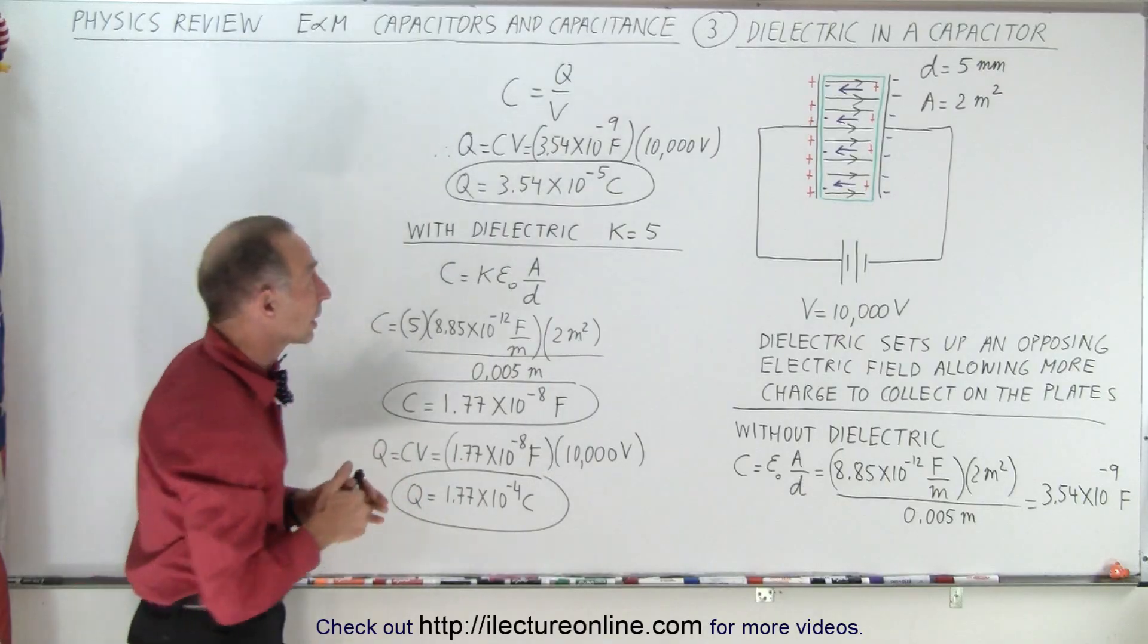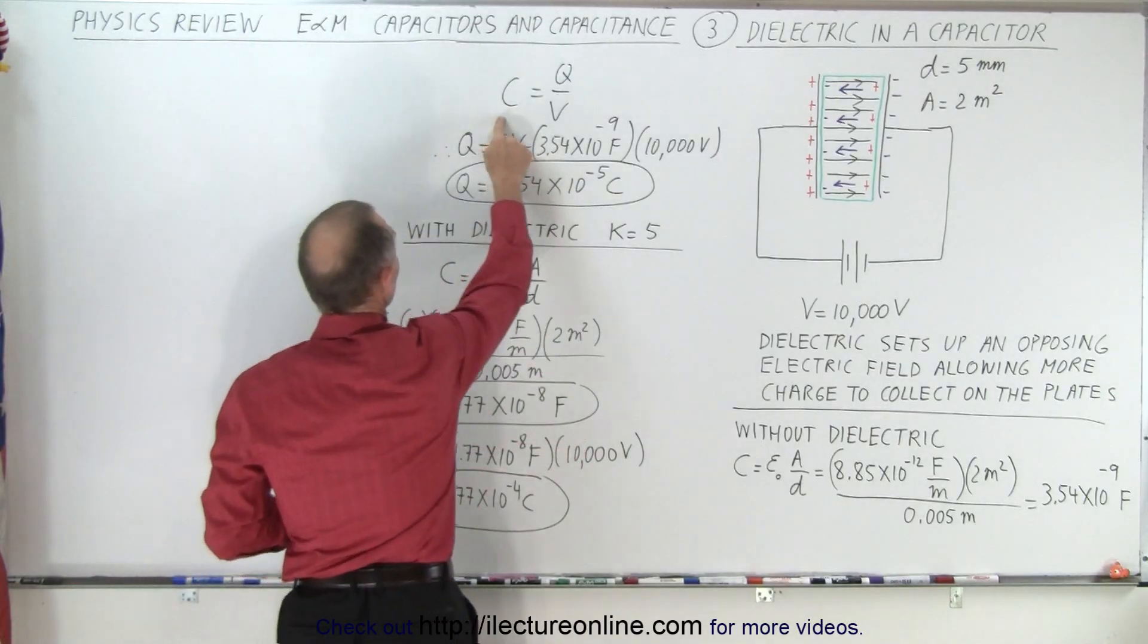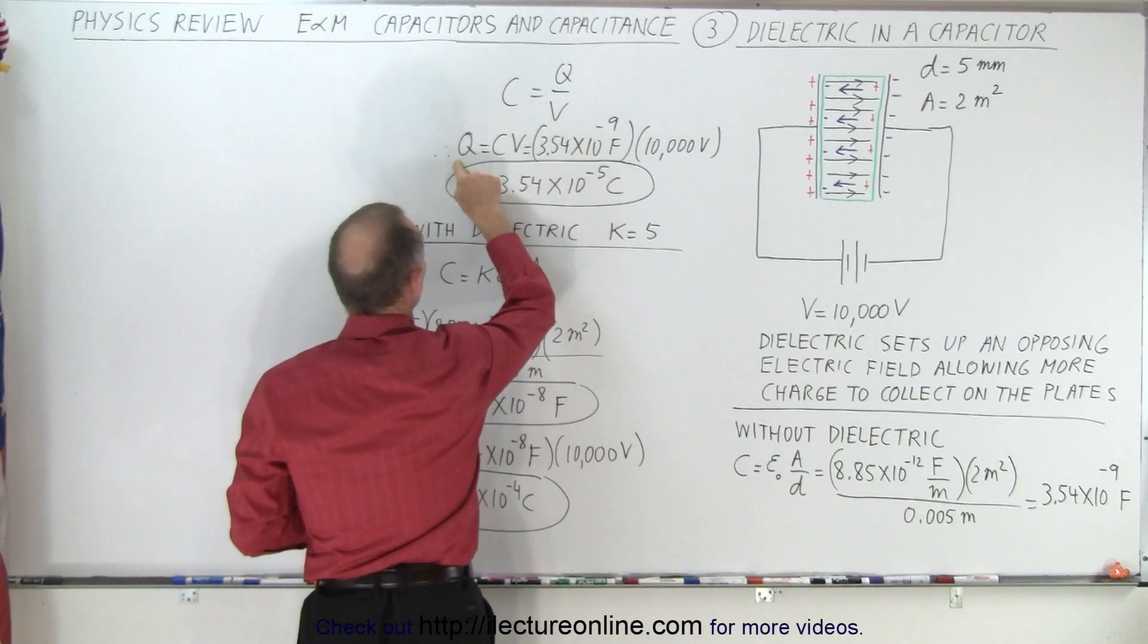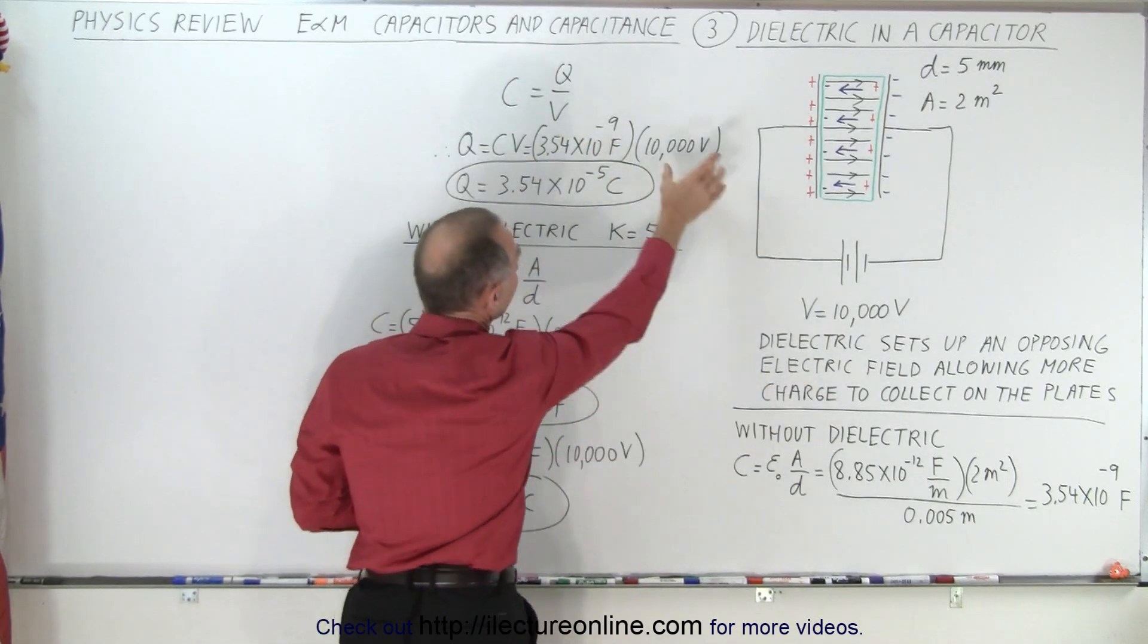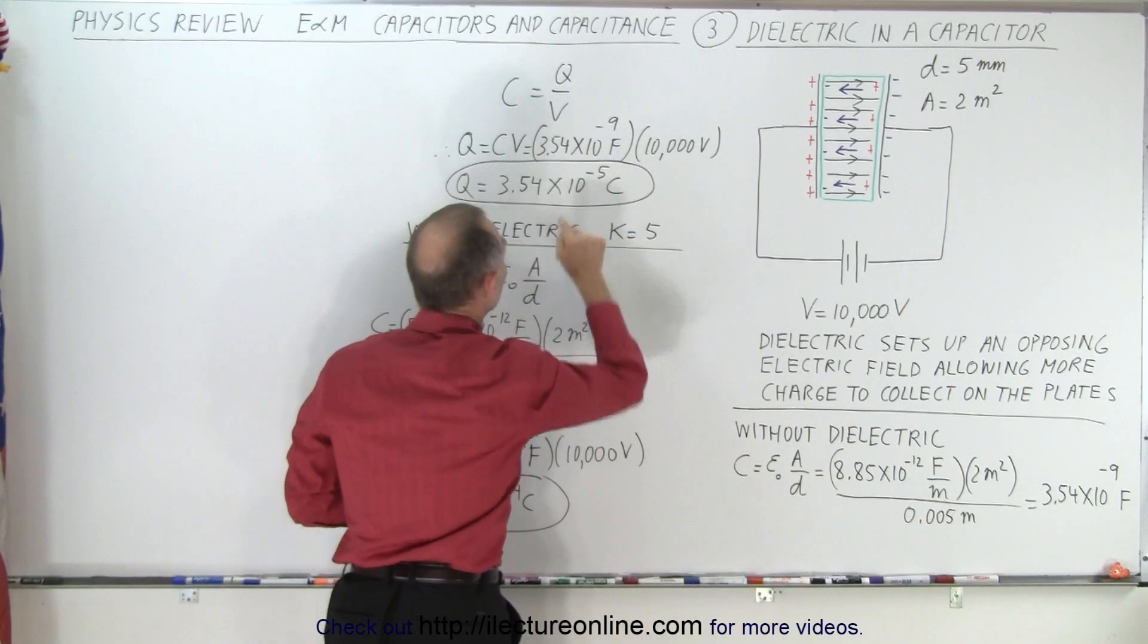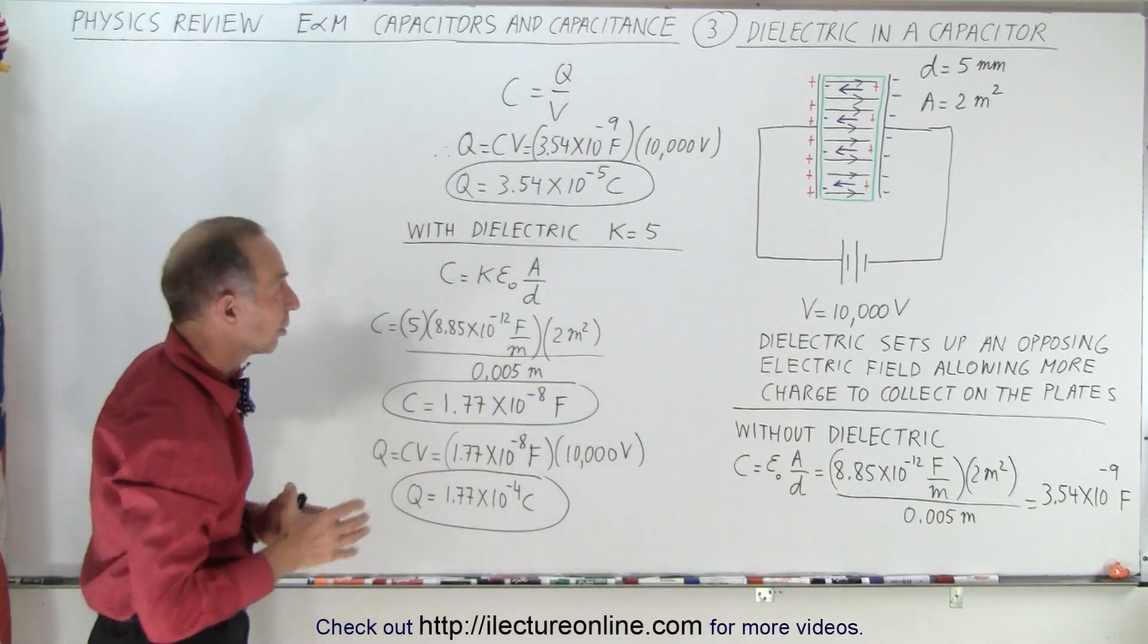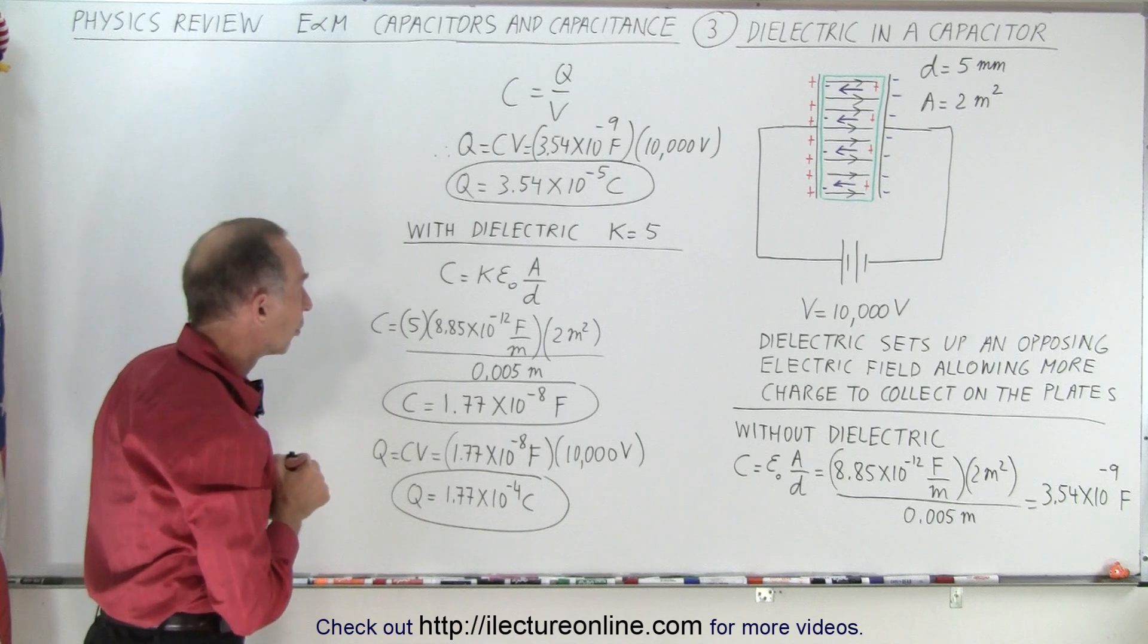And the amount of charge you can collect on them, well, since capacitance is charge over voltage, charge therefore is the product of capacitance and voltage. So the capacitance of that capacitor times the voltage allows you to push this much charge onto the capacitor using a 10,000 volt supply.